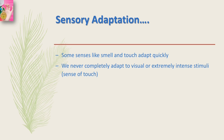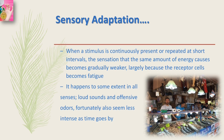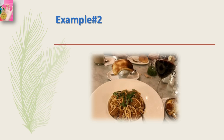To understand how the brain makes internal representations of the physical world, it is important to understand the sensory systems. When a stimulus is continuously present or repeated at short intervals, the sensation that the same amount of sensory energy causes becomes gradually weaker, largely because the receptor cells become fatigued. This happens to some extent in all the senses — loud sounds and offensive odors also seem less intense as time goes by.